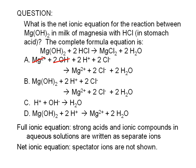The net ionic equation should have Mg(OH)₂ as one of the reactants. Therefore, we can also eliminate choice C.